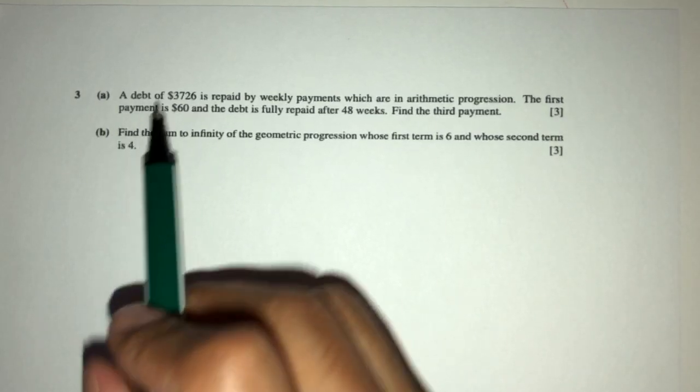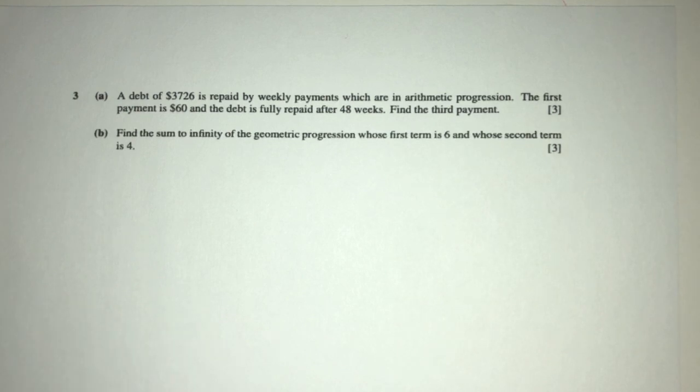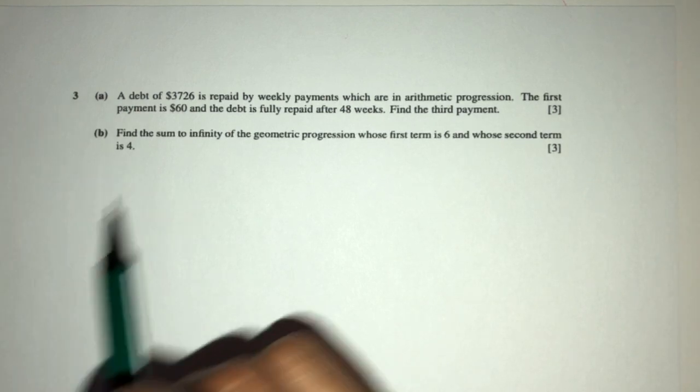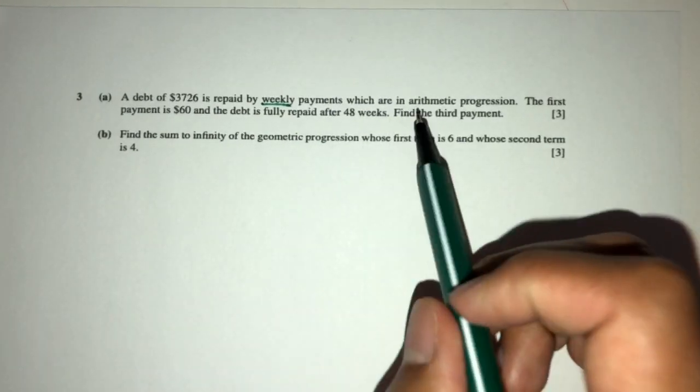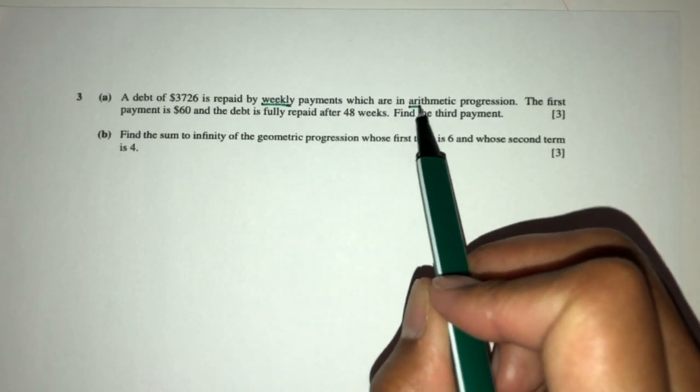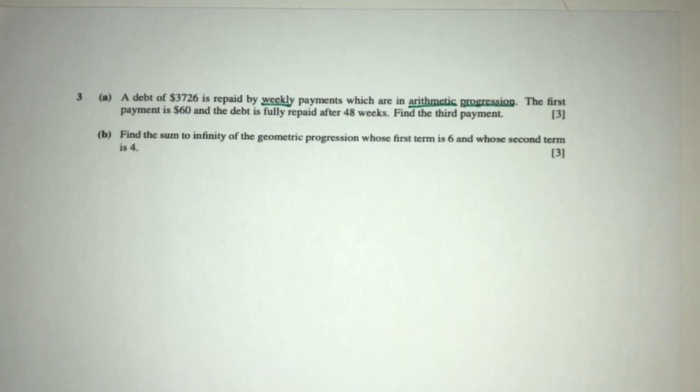So here we have a debt of $3,726. $3,726 is repaid by weekly payments which are in arithmetic progression. Now in this case, you know what kind of progression this is already, which is a very good thing when you're trying to solve this kind of question.